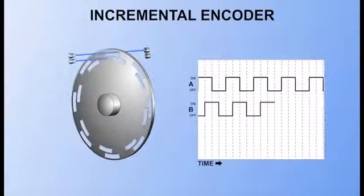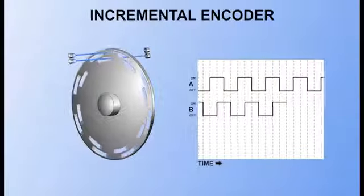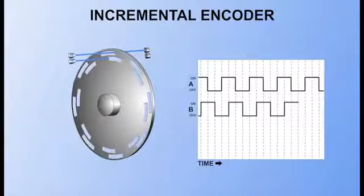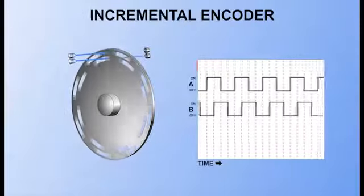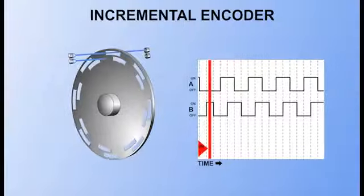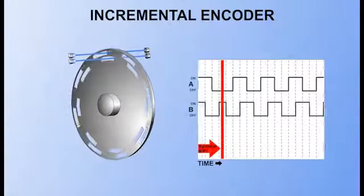In this example, if the nacelle yaw is clockwise, pulse B will turn on before pulse A. If the nacelle yaw is counterclockwise, pulse A will turn on before pulse B.